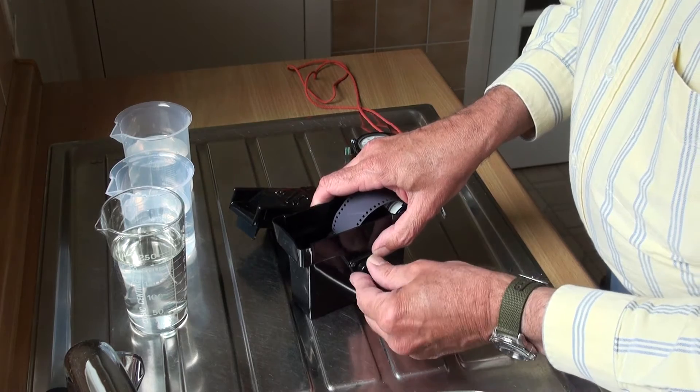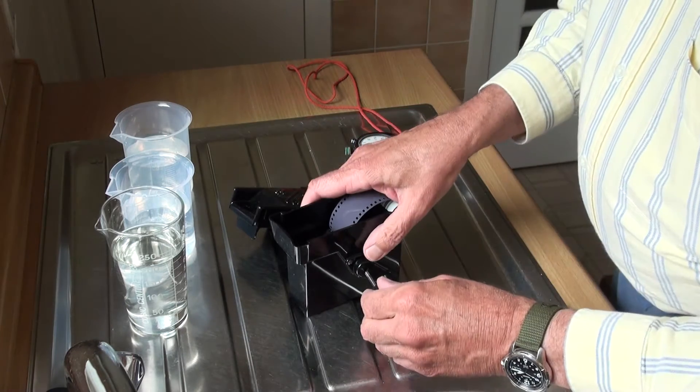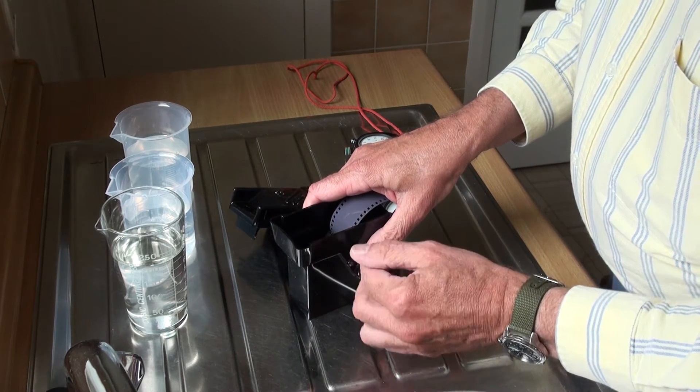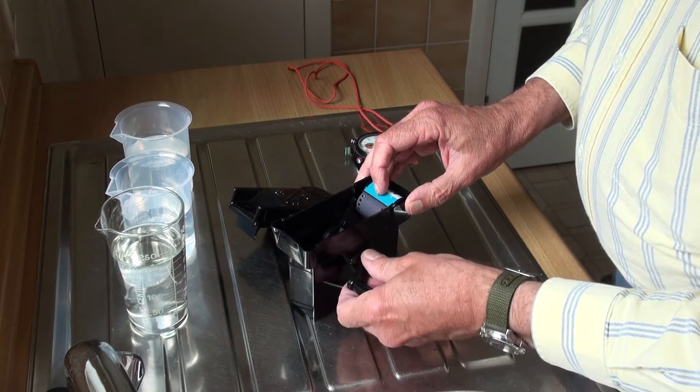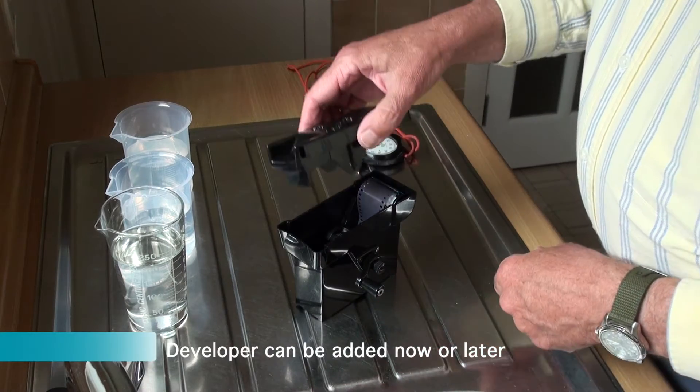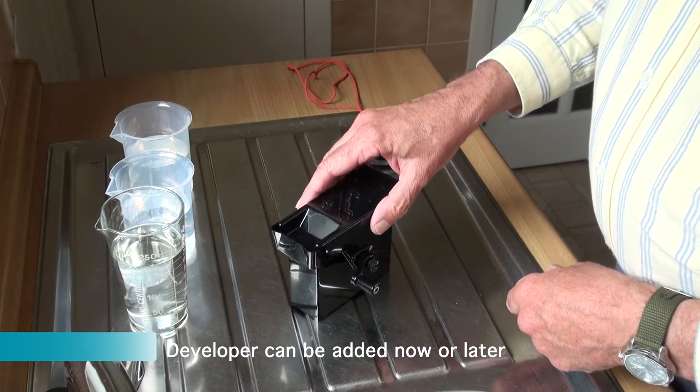Remember this tank has no central spiral. The film simply moves on itself as it's being developed in the light tight tank. So that's the lid on.